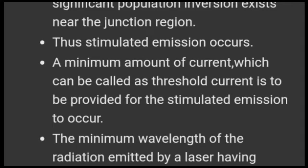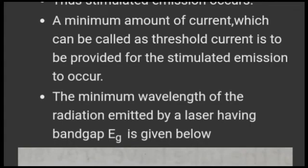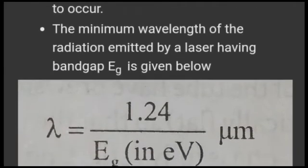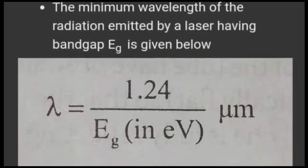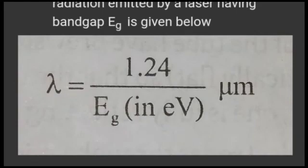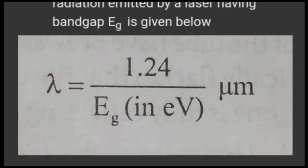The minimum wavelength of radiation emitted by the laser having band gap EG is given by: λ = 1.24 / EG, where EG is in electron volts and λ is in micrometers. Substituting EG = 1.4 eV gives a wavelength of approximately 0.886 micrometers for gallium arsenide as the active medium.